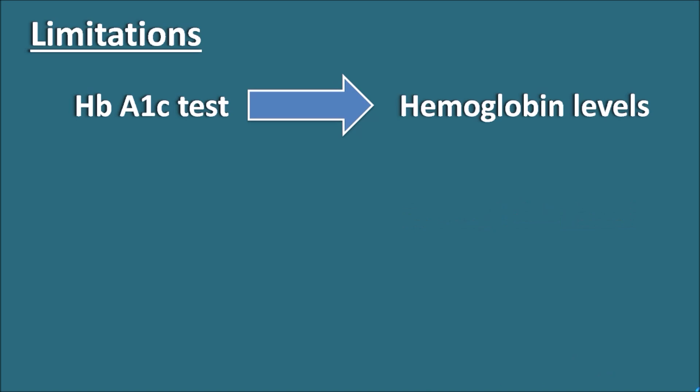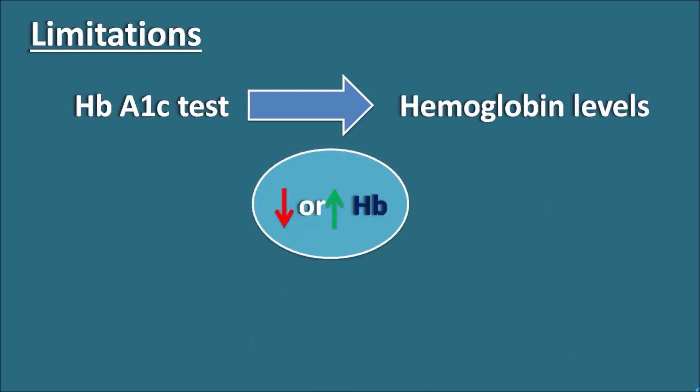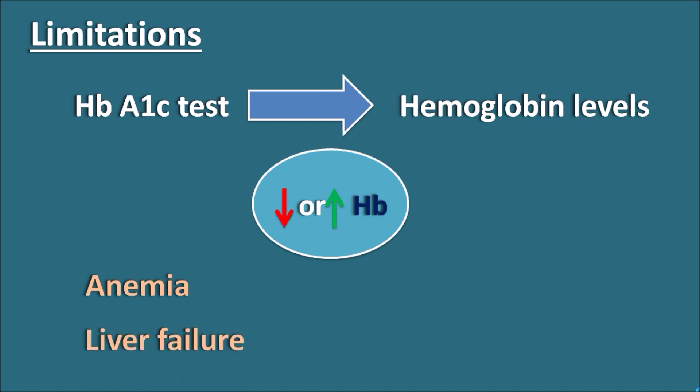Limitations of the HbA1c test. The HbA1c test mainly depends on the hemoglobin levels in the plasma. Any factors which may either increase or decrease the hemoglobin levels may affect the measured HbA1c values. For example, anemic conditions like aplastic anemia and megaloblastic anemia can decrease the hemoglobin levels within the plasma, which may decrease the HbA1c estimation in the patients. Similarly, liver failure can also decrease the hemoglobin levels, which will decrease the measured HbA1c values.